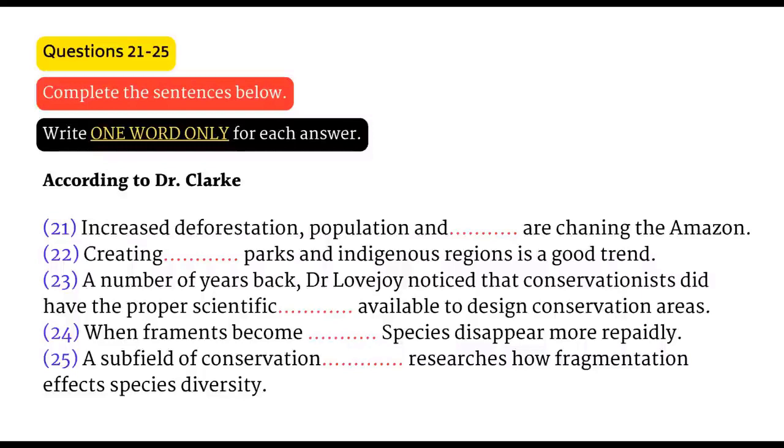I understand that you started the minimum critical size of ecosystems project. Could you tell me about it? A number of years ago, it became apparent that those practicing conservationists didn't have the scientific information available to properly design a conservation area. They didn't know how big it had to be, right? People were learning that as forests fragment, the fragments begin to shed species after they become isolated, so they end up becoming poor examples of what they had been. This relates to the size of the fragment.